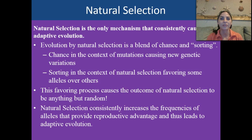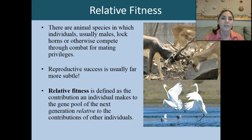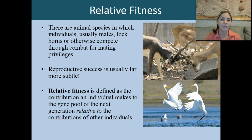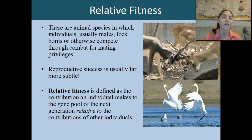Basically the opposite is artificial selection — we as humans are selecting for traits that we want, not what traits are best for that individual. Relative fitness is defined as the contribution an individual makes to the gene pool of the next generation relative to the contributions of other individuals. There are animal species in which individuals, mostly males, will lock horns, compete, fight, and combat for mating privileges, so reproductive success is usually far more subtle. We're going to discuss sexual selection in more detail in a different podcast.